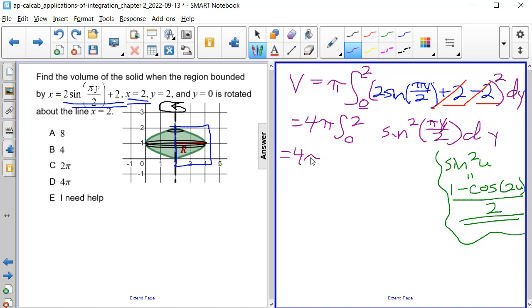So we're still going to have our 4 pi out in front and then the integral from 0 to 2 of 1 minus cosine of our angle. We have a 2 before that u value, so we have 2, and then we have pi times y divided by 2, and then that whole thing is over 2. Notice these two values cancel each other out. We can also pull this 1 half out and have 4 times 1 half times pi, and then the integral from 0 to 2 of 1 minus cosine of pi y dy.